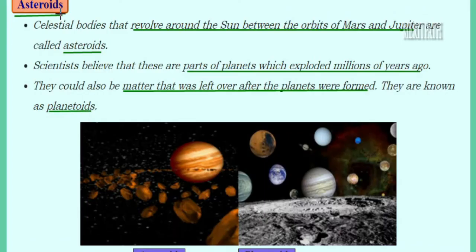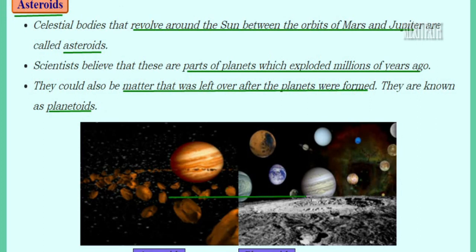Asteroids are also celestial bodies which revolve around the sun, in between the orbits of Mars and Jupiter. These are also parts of planets which have exploded or burst millions of years ago. There was matter left over after the planets were formed — this leftover matter was known as planetoids. An asteroid and a planetoid are shown here.